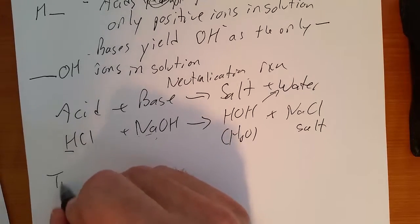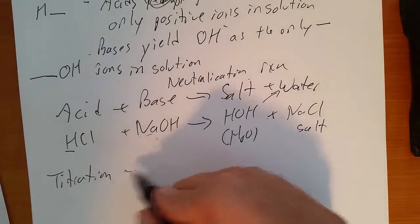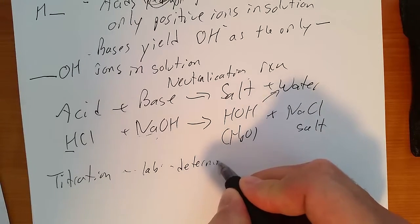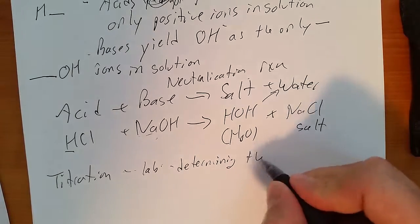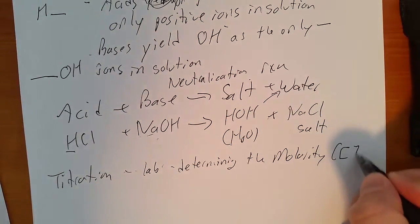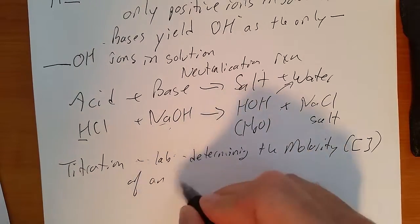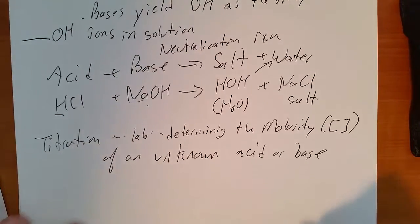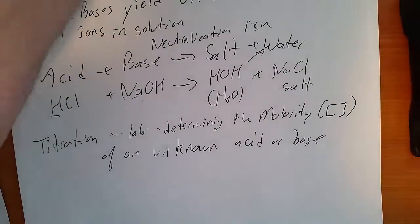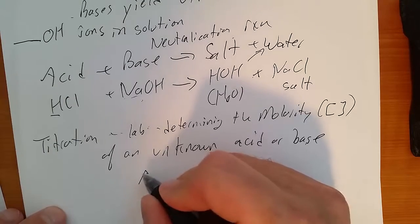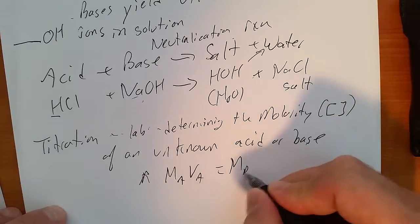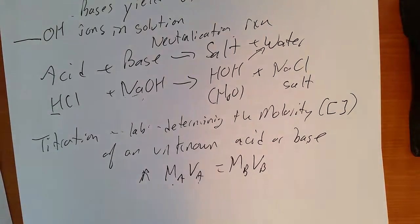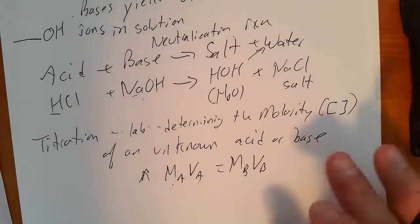The lab we did was a titration, which is a method of determining the molarity, which is the concentration of an unknown acid or base. On table T, MAVA equals MBVB. Molarity of your acid times the volume of your acid equals the molarity of the base times the volume of the base. And we did that in class.